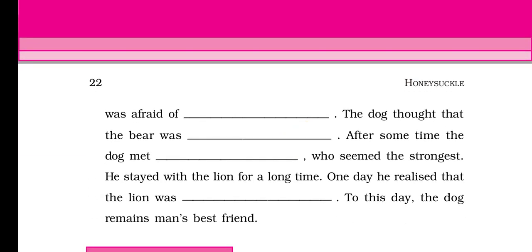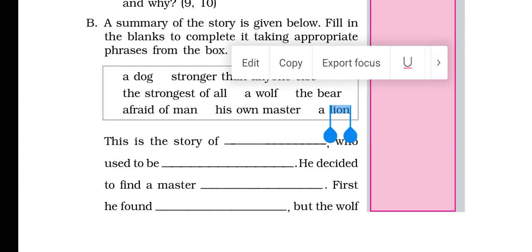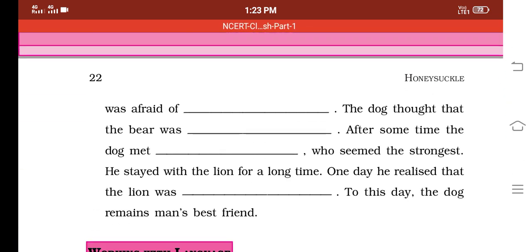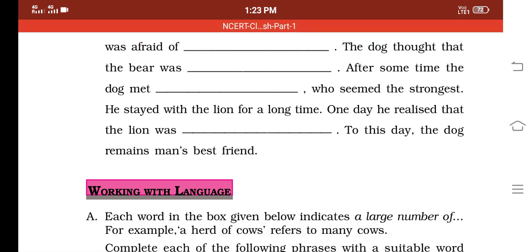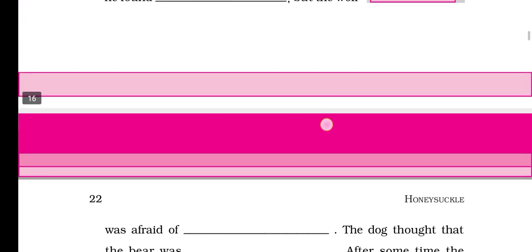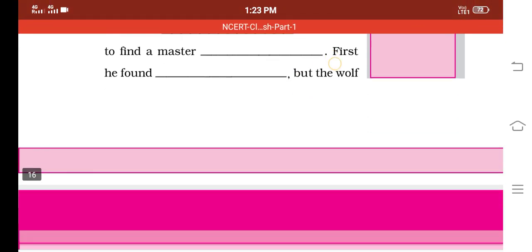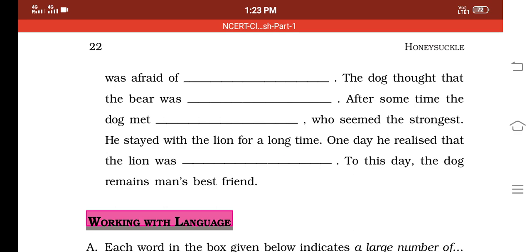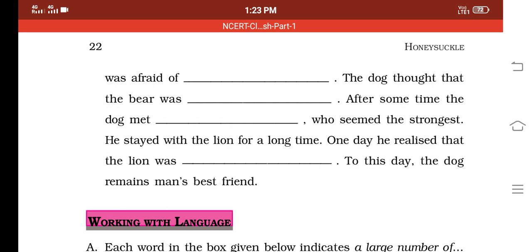After some time, the dog met whom? Yes, the lion. The word is 'the lion.' The dog met the lion, who seemed to be the strongest. He stayed with the lion for a long time. One day he realized that the lion was afraid of man. To this day, the dog remains man's best friend. That's all.